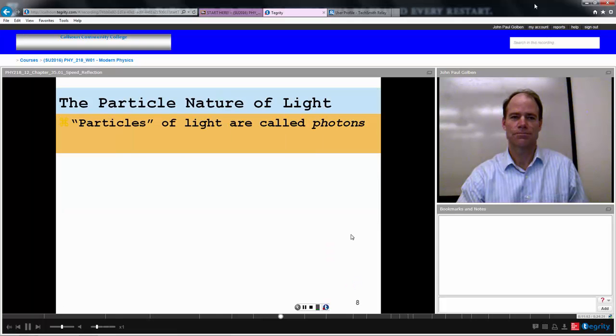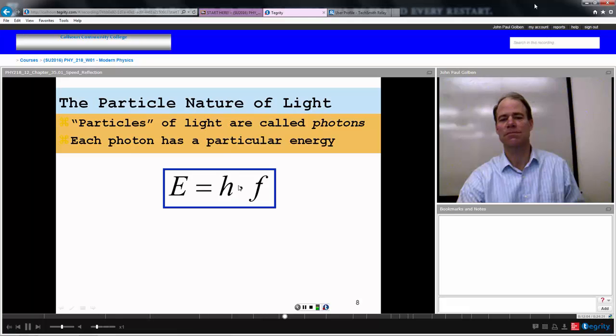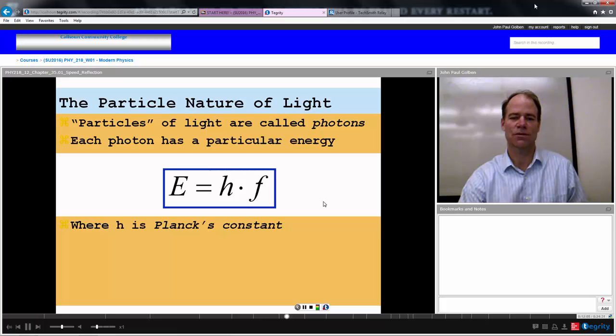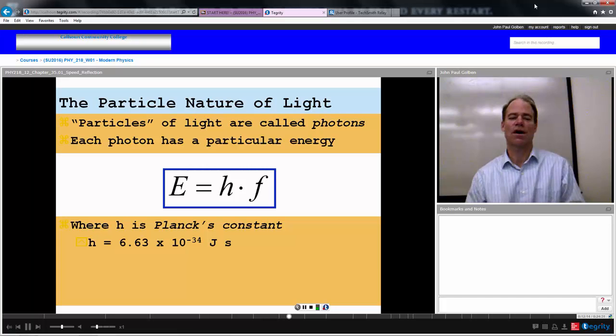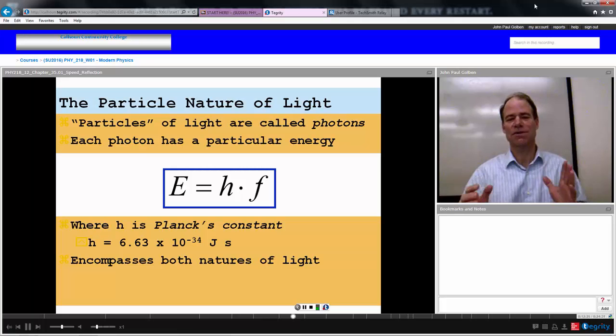So if you treat light as a particle, particles of light are called photons. Each photon has a particular energy. The energy is equal to some constant times the frequency of the light. The value of that constant is 6.63 times 10 to the minus 34 joule seconds. Actually, in a sense, this E equals some constant times frequency encompasses both natures of light. Because it's treating light as bundles of energy, discrete bundles of energy, each of them going as this constant goes.